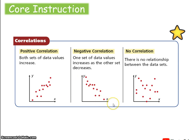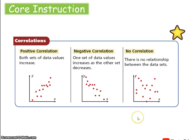A negative correlation has a downhill look to it. And then finally there is no correlation, in which there is no relationship between the data sets. We can still plot data sets with no correlation, but we can't draw any conclusions that the data is related to one another.